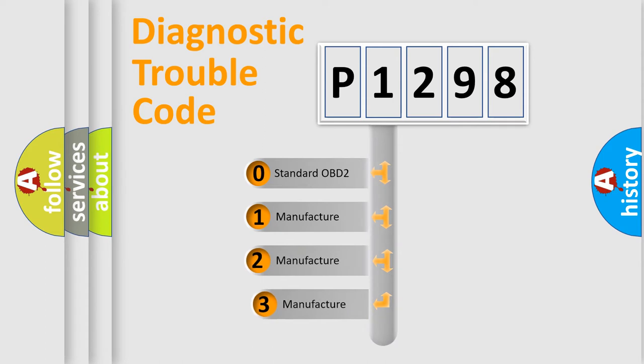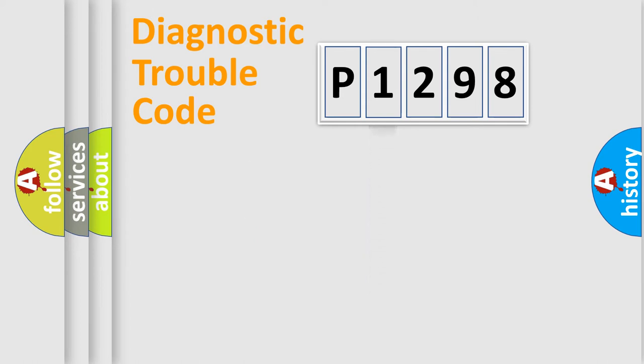If the second character is expressed as zero, it is a standardized error. In the case of numbers 1, 2, or 3, it is an expression of the car-specific error.